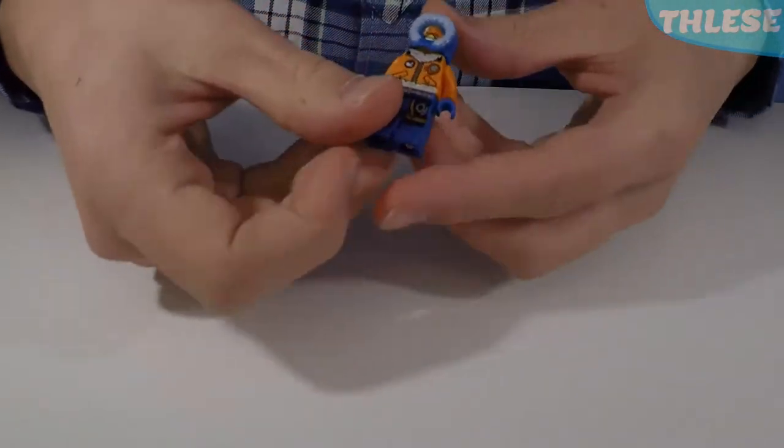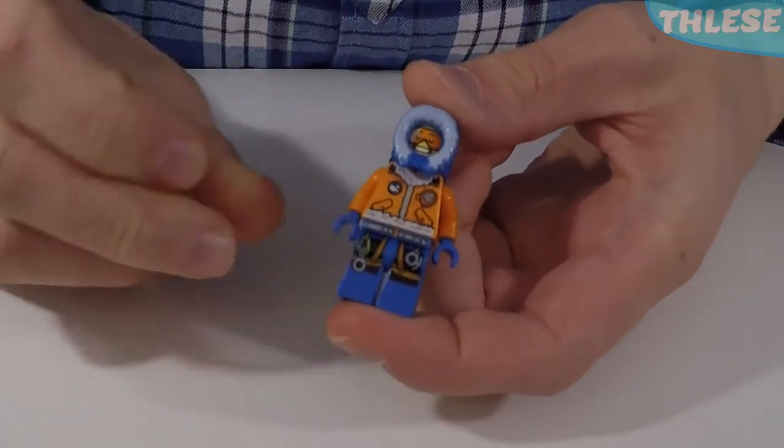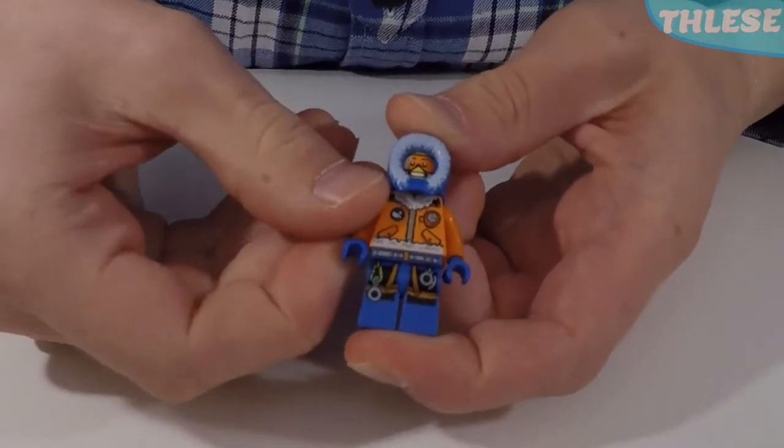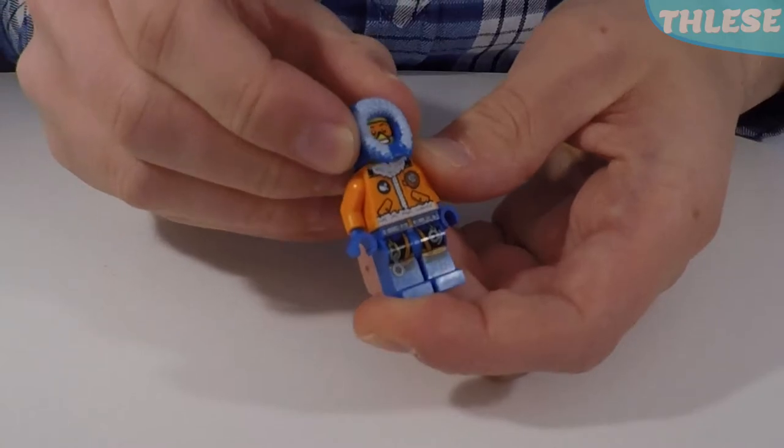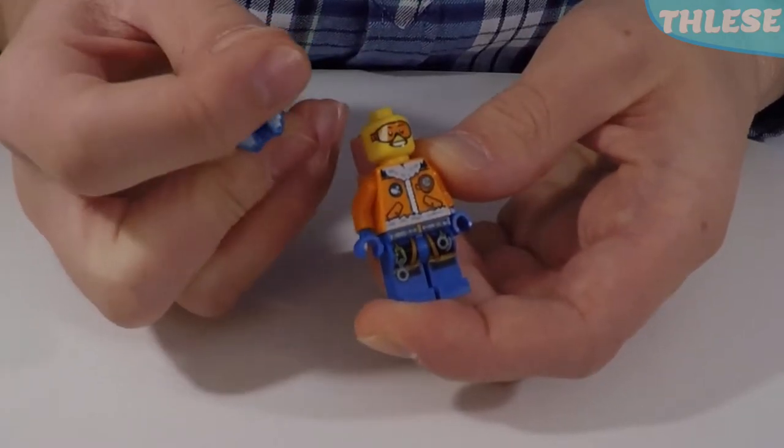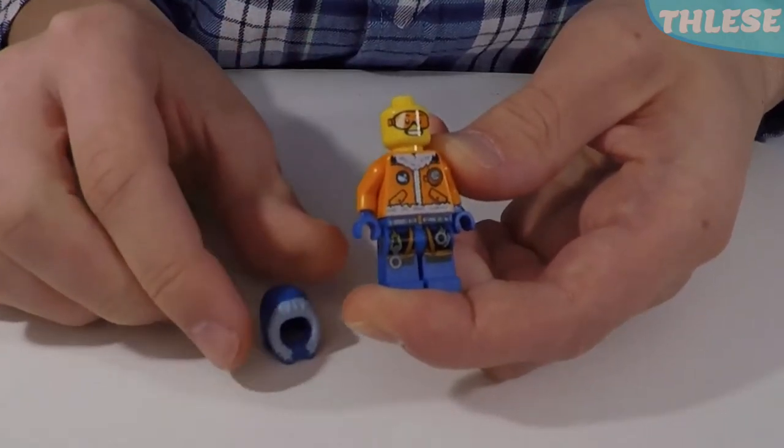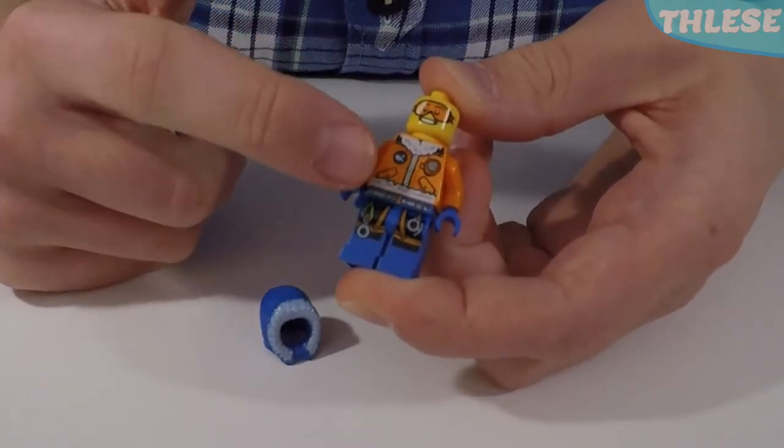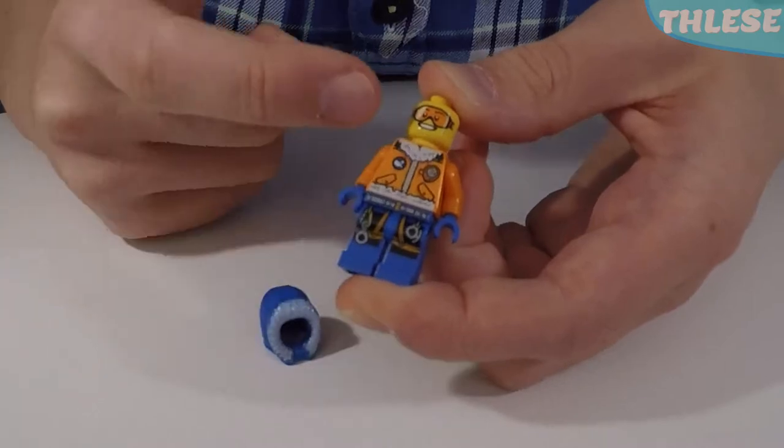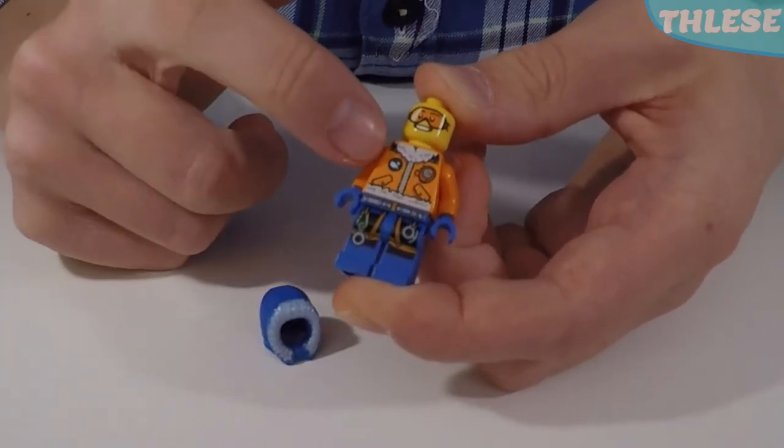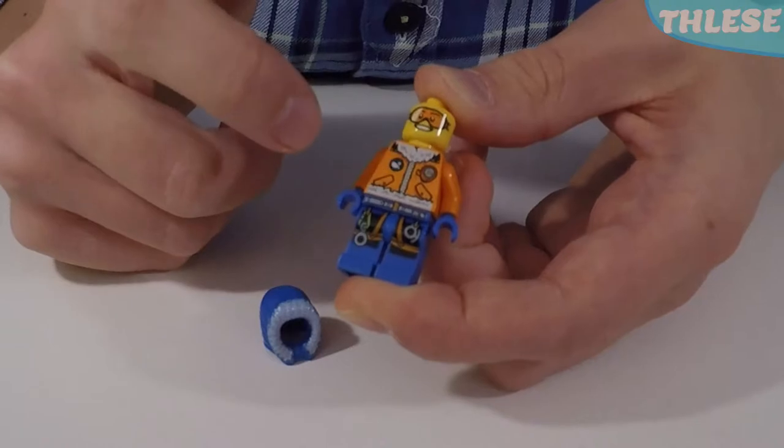So this set comes with one minifigure and that is this Arctic Explorer. This Arctic Explorer has an orange jacket with some dark blue gloves. He has a blue hood with some white fluff going around the edges to keep him nice and warm. On the front of his torso we have a zip-up and some more fluff going across the edges and at the neckline, and we also have the Arctic logo and I suppose a little PDA.